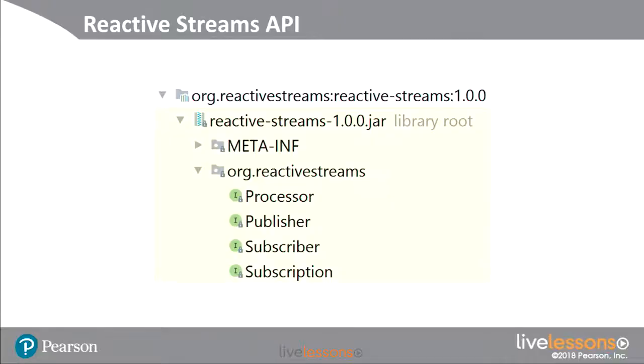Reactive systems as a whole is a wider concern. But in terms of reactive programming, there is, in the Java world, a consistent standard API for different reactive programming libraries to talk to each other. And this is what it looks like. It's been defined as being in the package org.reactivestreams. It's made up of four very simple interfaces: a publisher, a subscriber, a processor which combines both publisher and subscriber, and a subscription, which is how subscribers can manage their subscriptions.